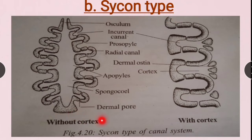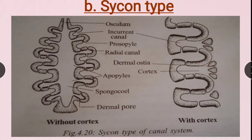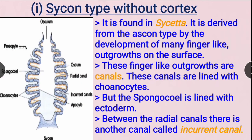The Sycon type is divided into two subtypes: without cortex and with cortex. There are finger-like structures in the outermost layer. The without-cortex type is found in Scypha. It is derived from the Ascon type and is more developed, with many finger-like outgrowths.